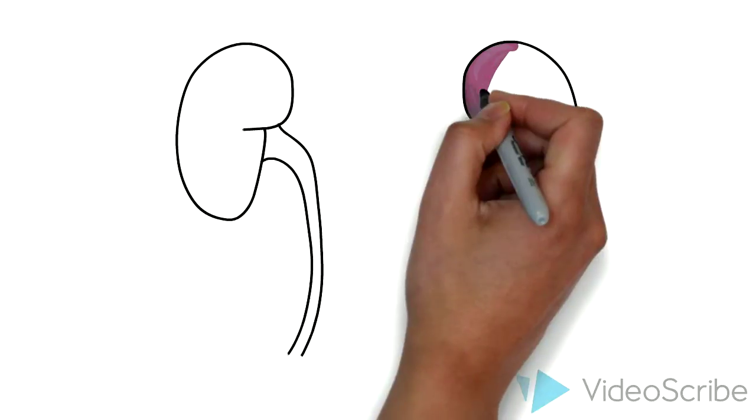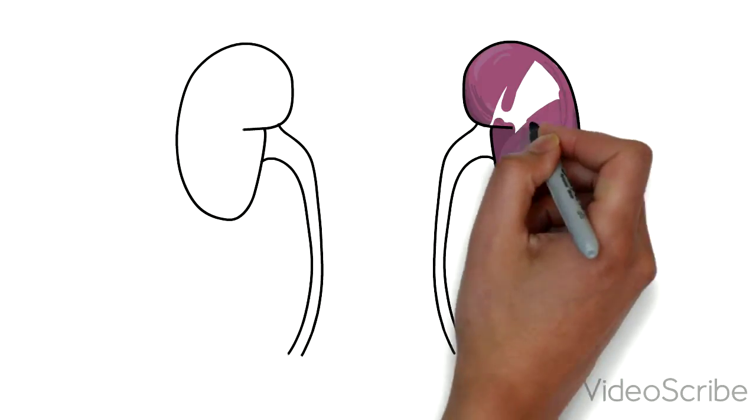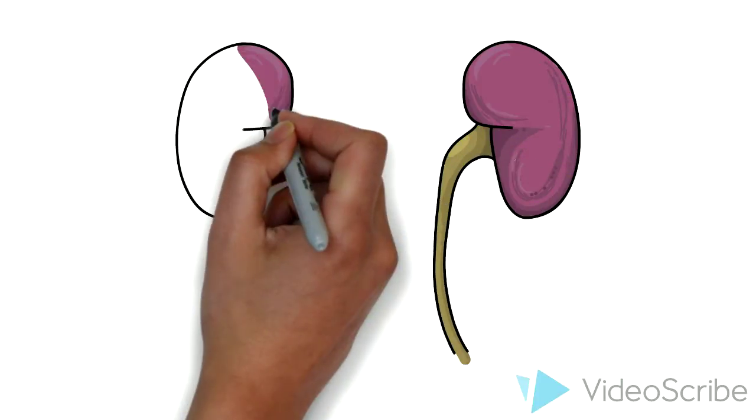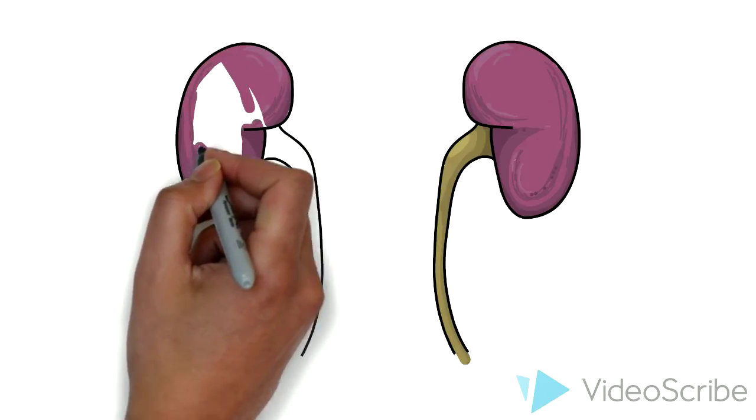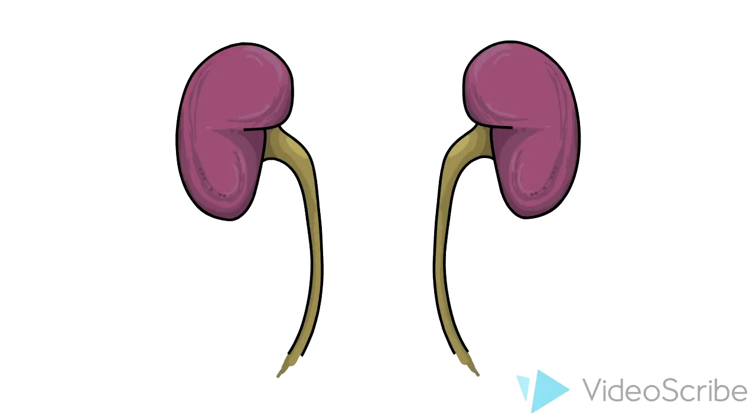Finally, we have the adrenals. These are the pyramidal glands that sit just superior to the kidneys. It produces steroid hormones such as cortisol and stress hormones like adrenaline and dopamine. These important glands produce much of the chemical responses throughout our bodies, including our fight-or-flight response.